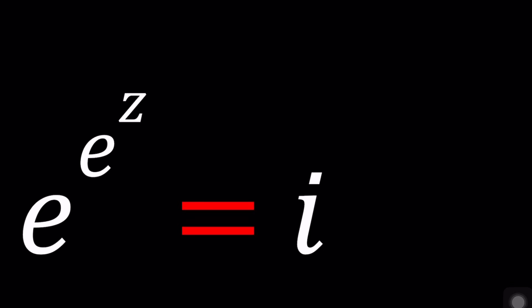Welcome to a plus b i. This channel is all about complex numbers and in this video we're going to be solving a very exponential equation with complex numbers and with i. We have e to the power e to the power z equals i.